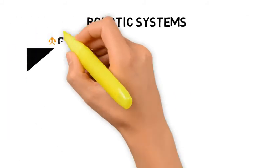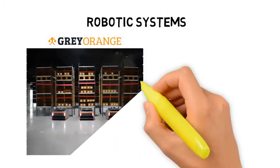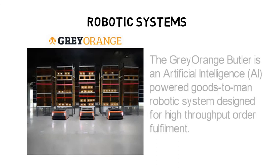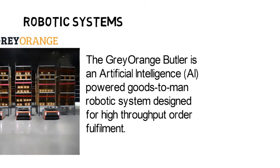The Grey Orange Butler is an artificial intelligence-powered goods-to-man robotic system designed for automated inventory put-away, replenishment, and order picking in a high-throughput order fulfillment situation such as in e-commerce businesses. It significantly reduces order fulfillment and inventory replenishment time in a warehouse and thereby provides a competitive advantage for the business.